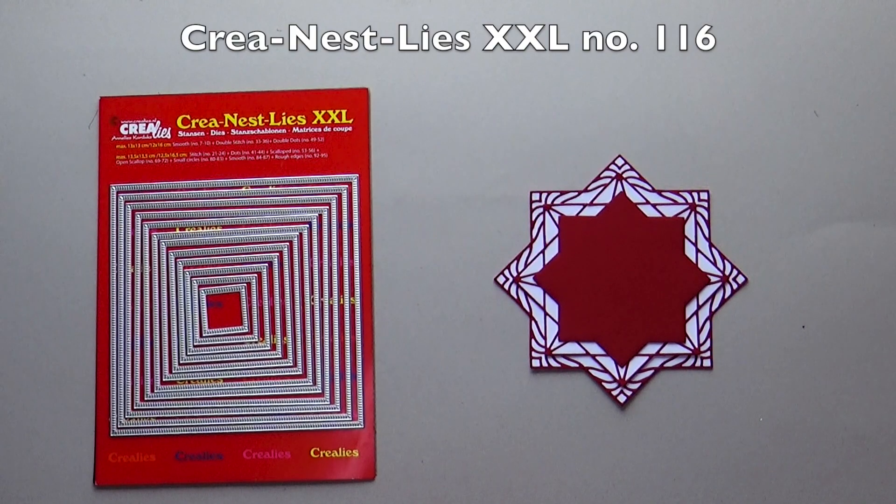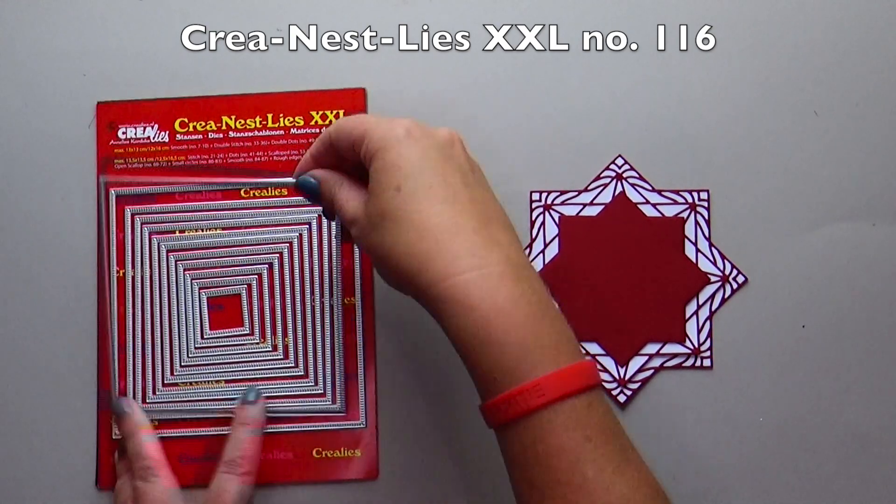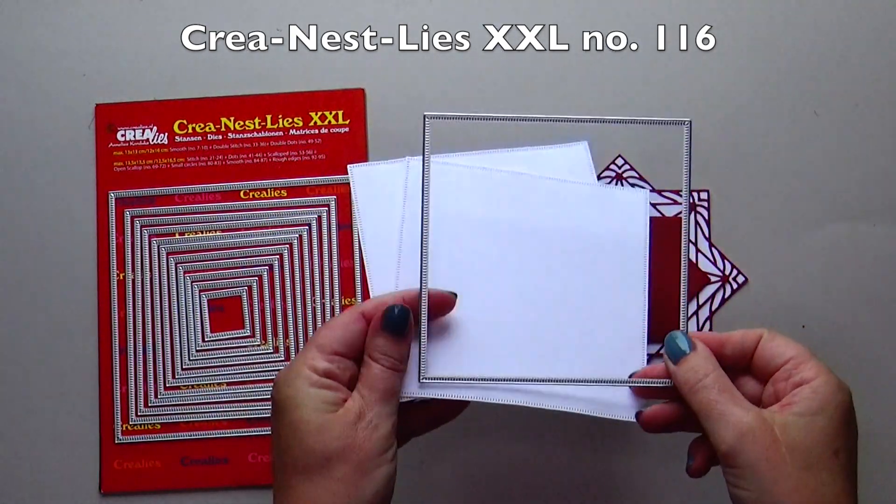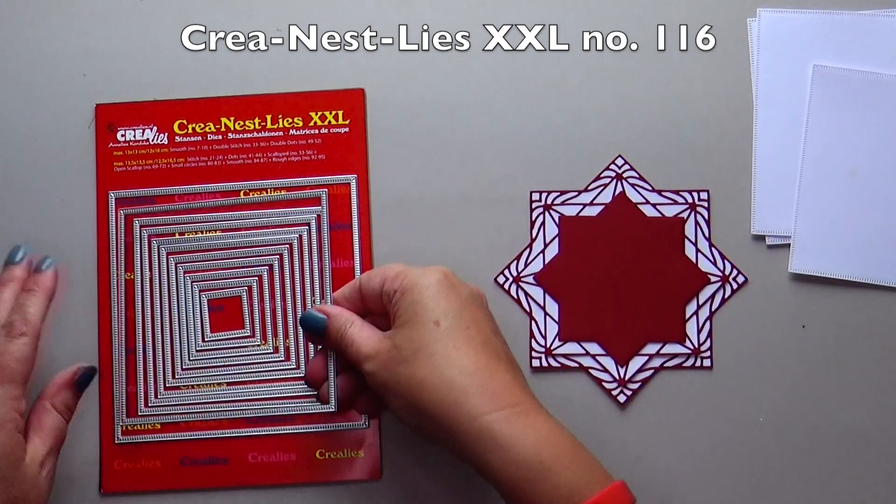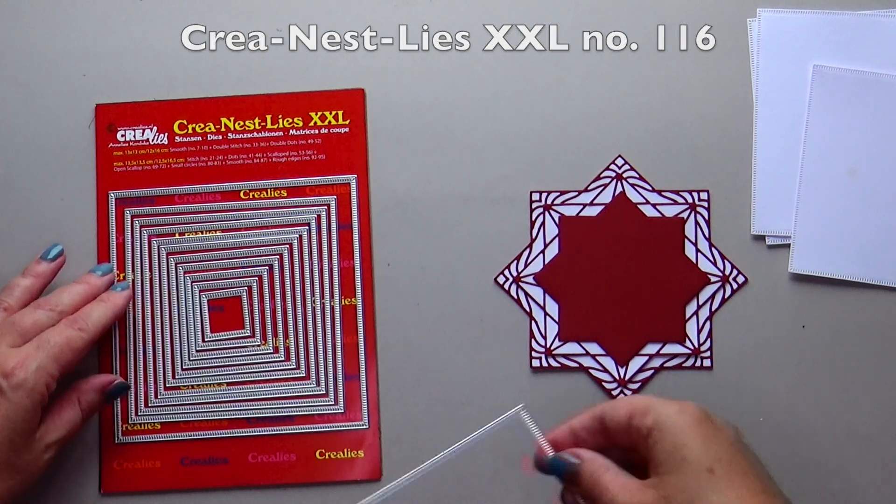For the card base I use Crealies Nest-Lies XXL number 116. Use the second largest die to die-cut two squares out of white cardstock. Use the third die counted from the outside once to die-cut a square out of white cardstock.